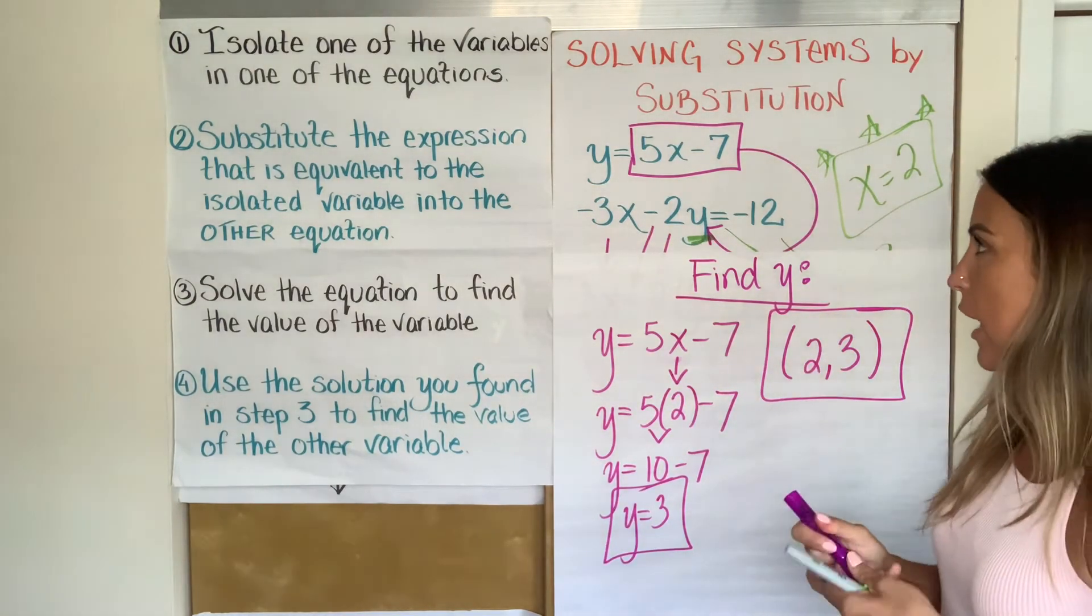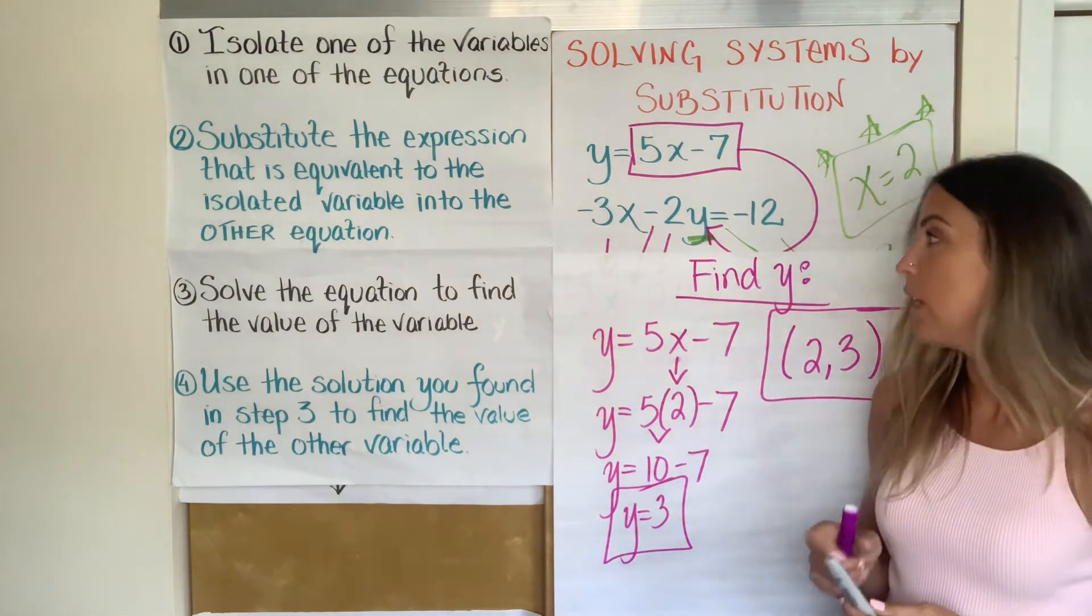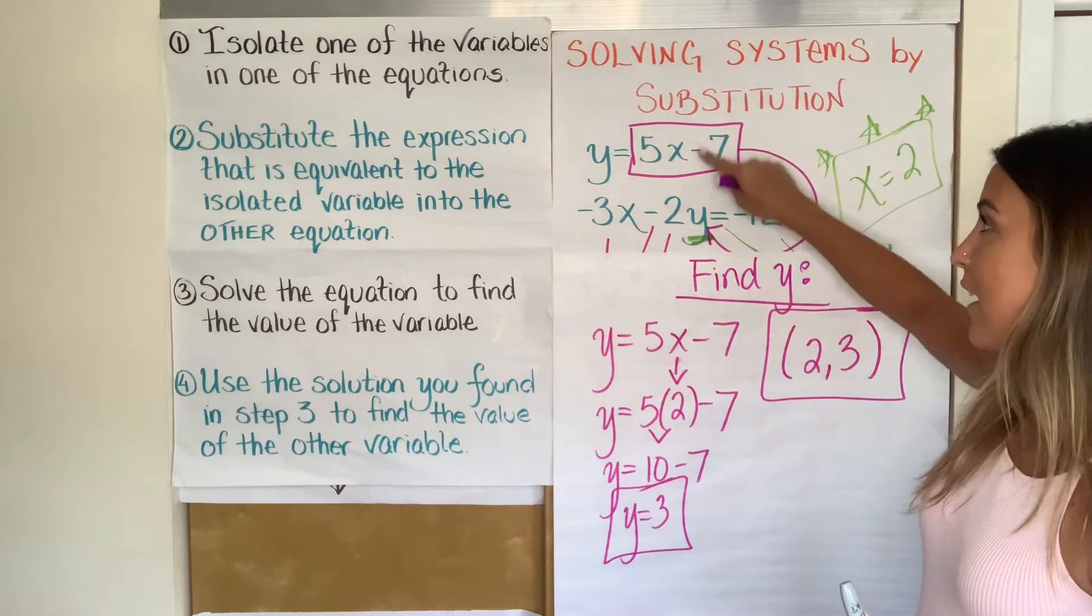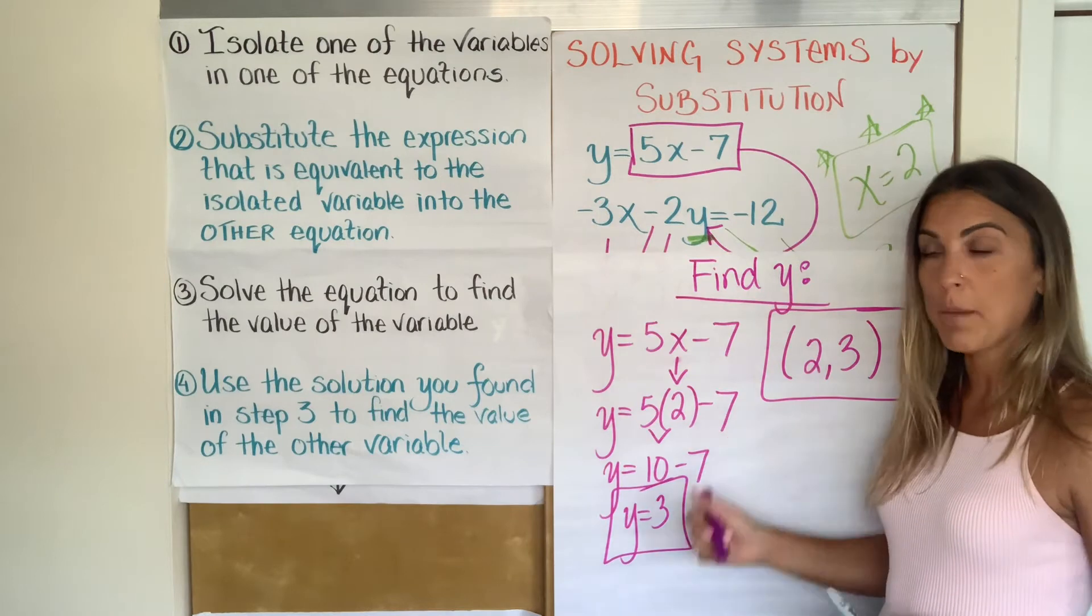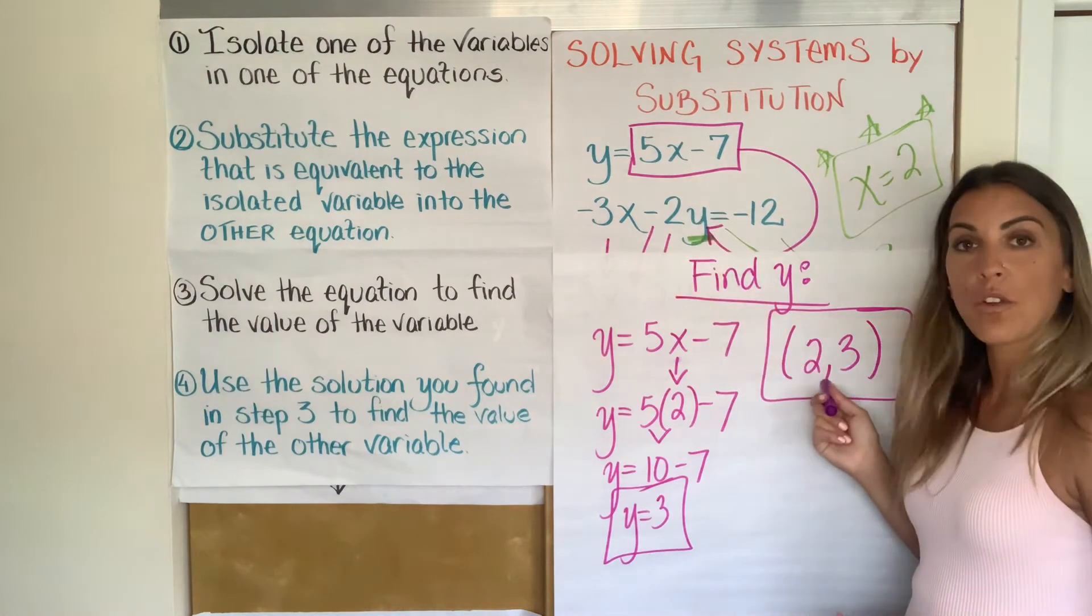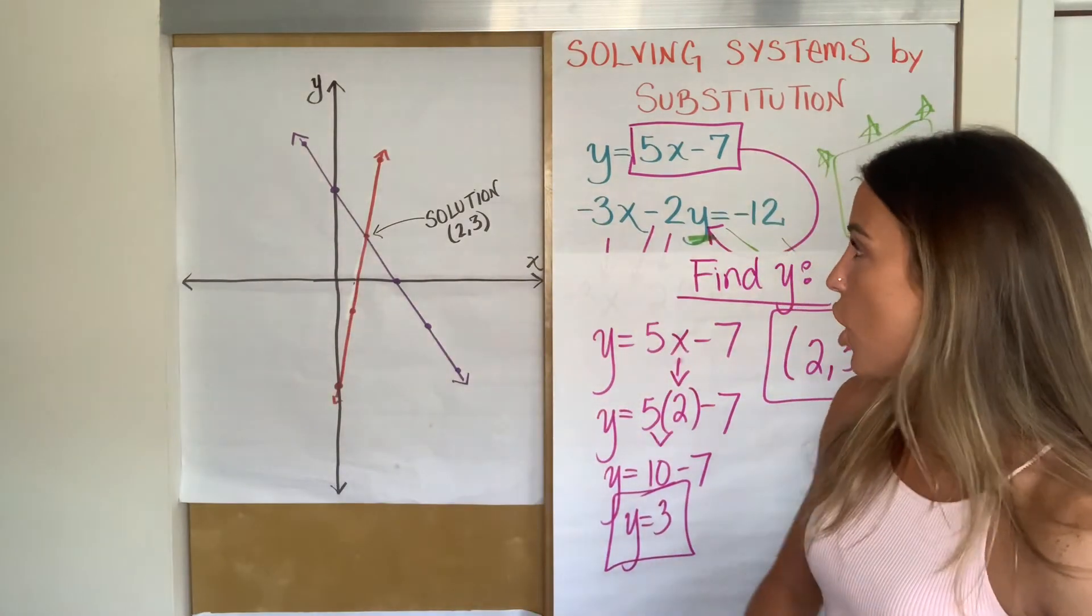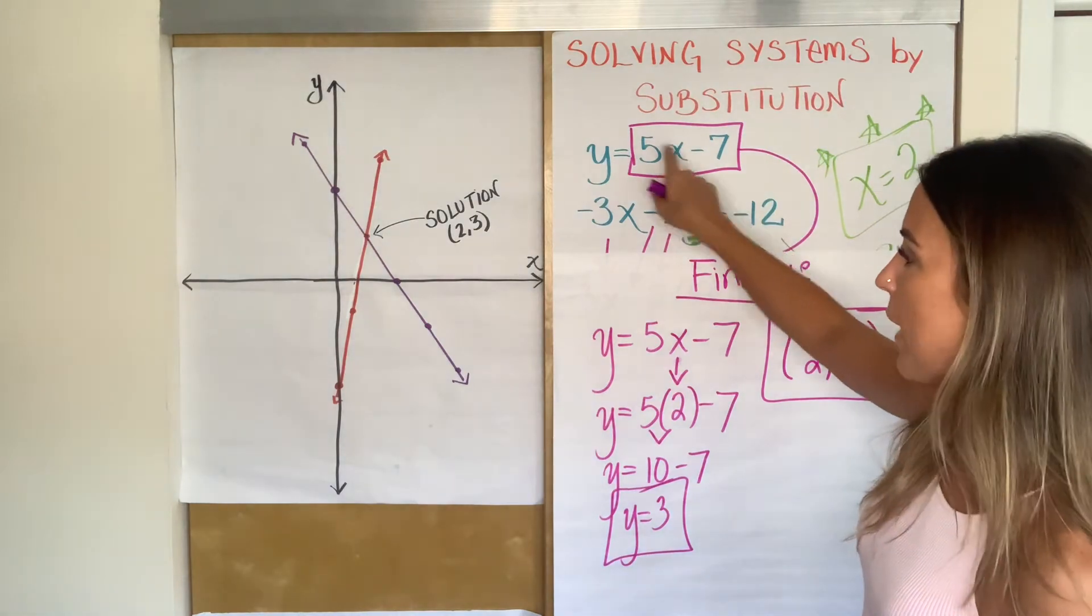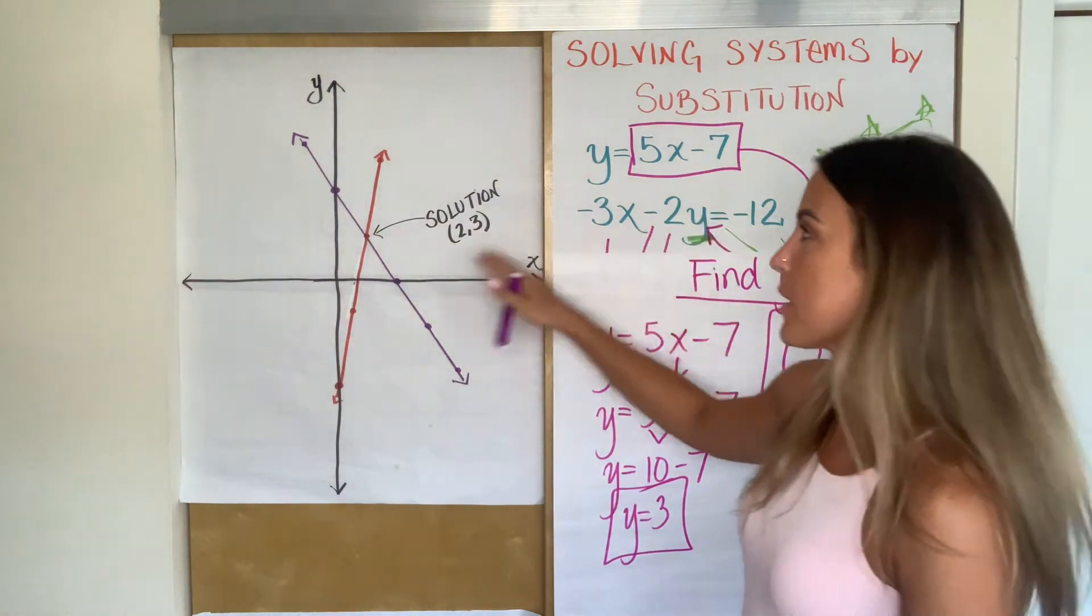And now if you've already learned about systems, you might be able to connect this to a graph. Do you know what is supposed to happen at 2, 3 if that's really the solution of the system? If this is the solution, then the two lines that would be graphed by this should intersect at 2, 3. So if you had graph paper or if you have a graphing calculator and you want to check this, if you graph these two lines, this is where they're supposed to intersect if we're correct. And I've done that for us. So I'm going to show you the graphs.